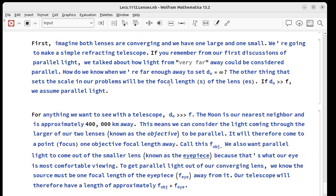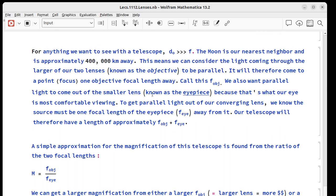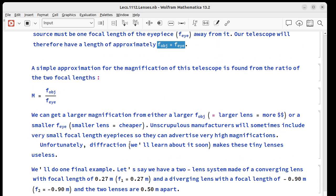Let's say both lenses are converging. We've got one large lens, one small lens. We're just going to make a simple refracting telescope. So when we first talked about parallel light, what we said was light from very far away is considered parallel. How do we know what's far enough? How do we know if we can set object distance to infinity? The thing that sets the scale in our problems is the focal length of the lens or the lenses. So if the object distance is very large compared to f, we can assume the light's parallel. For anything we're going to look at with a telescope, the closest thing we could see is the moon. That's 400,000 kilometers away and that's ridiculously greater than the focal length of any telescope we could build. So the light coming through the larger of the two lenses, which is called the objective, we consider that parallel. That means it's going to come to a point one objective focal length away. Now we want parallel light to come out of the smaller lens for your eye because that's what your eye is most comfortable viewing. And the way to get parallel light out of a lens is to put a point source one eyepiece focal length away from it. So the length of the telescope is pretty much focal length of the objective plus focal length of the eyepiece.